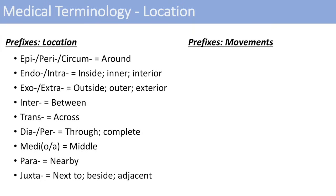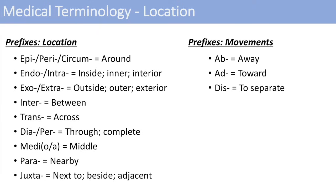The next prefixes involve movements. Ab means away — so when you abduct your arms, you're moving them away from your body. Abduction is an easy way to remember ab for away. The next one is ad, which means towards — adducting your arms means bringing them in towards your body. And dis means to separate — think of displace, separating things out.